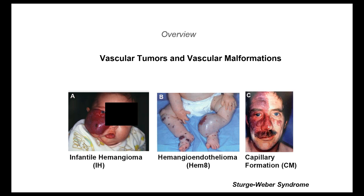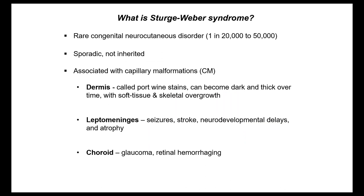This gentleman has what's called Sturge-Weber syndrome. It's a rare congenital neurocutaneous disorder, estimated to occur in one in 20,000 to one in 50,000 babies. It's sporadic — not inherited — and it's associated with capillary malformations in three locations. I'll be abbreviating capillary malformation as CM throughout the talk.